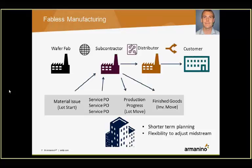The third set of integrations is around being able to track your work in process — determining which raw material wafer lots should be started in production, and being able to have service purchase orders against the services that will be performed by your contract manufacturer: assembly, test, packaging, whatever services you pay for. When you receive feedback from the production process itself, you're able to match the production steps to the service purchase orders and track not only the cost but the progress of the production as it goes through.